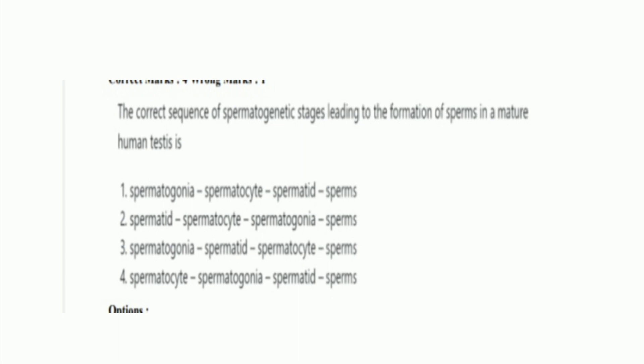Next question: the correct sequence of spermatogenetic stages leading to the formation of sperm in a mature human testis is? Option 1: spermatogonia → spermatocyte → spermatid → sperm. Option 2: spermatid → spermatocyte → spermatogonia → sperm. Option 3: spermatogonia → spermatid → spermatocyte → sperm. Option 4: spermatocyte → spermatogonia → spermatid → sperm. The right answer is option 1 — spermatogonia changes to spermatocyte, which turns to spermatid, and finally turns into sperm.